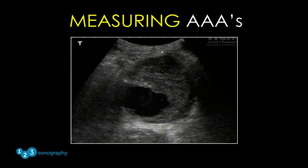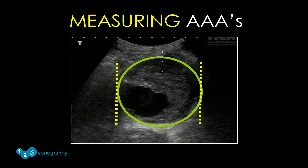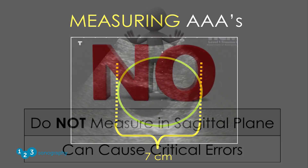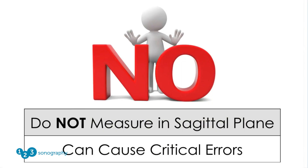Another important pointer is to always measure the abdominal aorta in the transverse or axial plane. In this example, the size of the abdominal aortic aneurysm in the transverse plane is seven centimeters. When measuring in the longitudinal or sagittal plane, the examiner may be unaware that the beam is not directly striking the target in the anterior-posterior plane — the ultrasound signal can be directed tangential to this plane and generate a falsely low measurement.